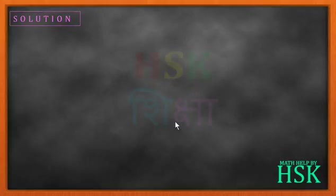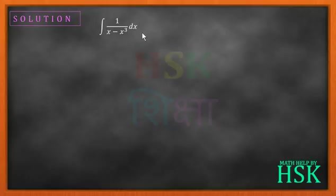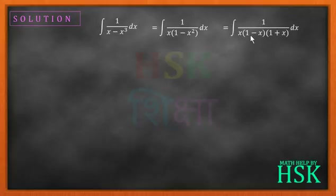To solve this question, first I'm going to convert this fraction, which is a cubic expression in x, into its factors. This can be written as 1 upon x into 1 minus x squared, and further 1 minus x squared can be factorized as 1 minus x into 1 plus x.